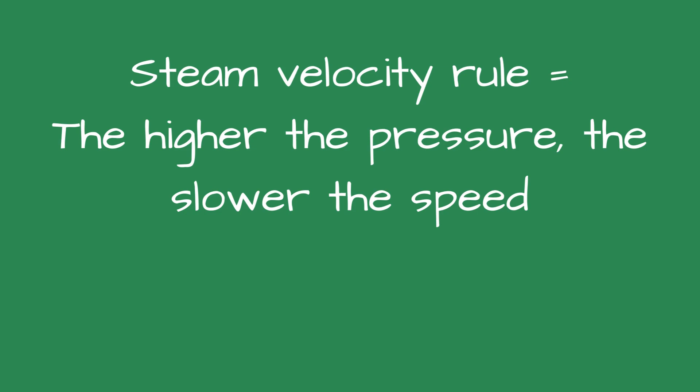Steam velocity is also the reverse of what one would think. Consider a 400,000 BTU steam boiler with an output of 320,000 BTUs connected to a 4-inch black iron pipe. At 2 PSI, the velocity inside the pipe is 25 feet per second or 17 miles per hour. If the steam pressure is increased to 12 PSI, the speed drops to 16 feet per second or 11 miles per hour — about 35% slower. When sizing steam pipes for low-pressure steam systems, 40 feet per second is the most common velocity boiler manufacturers recommend for near-boiler piping. This should be verified with the manufacturer.